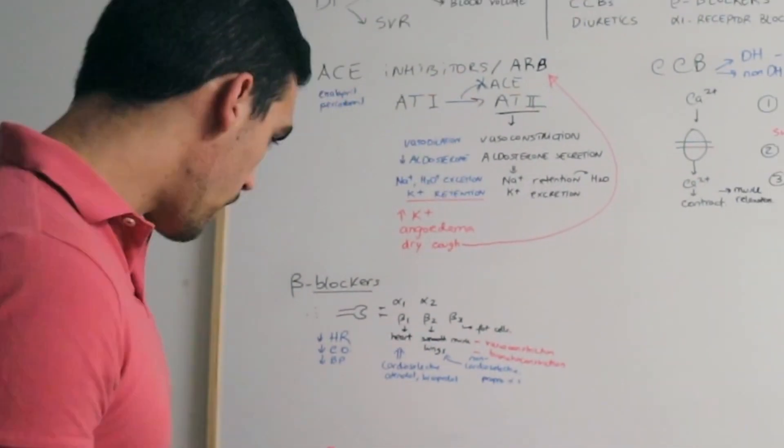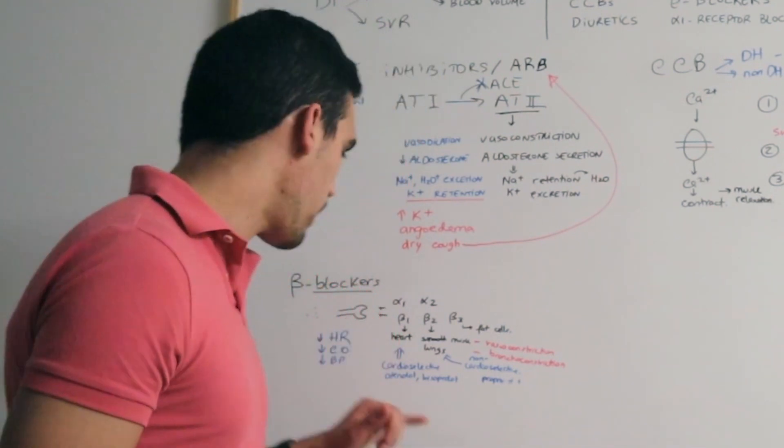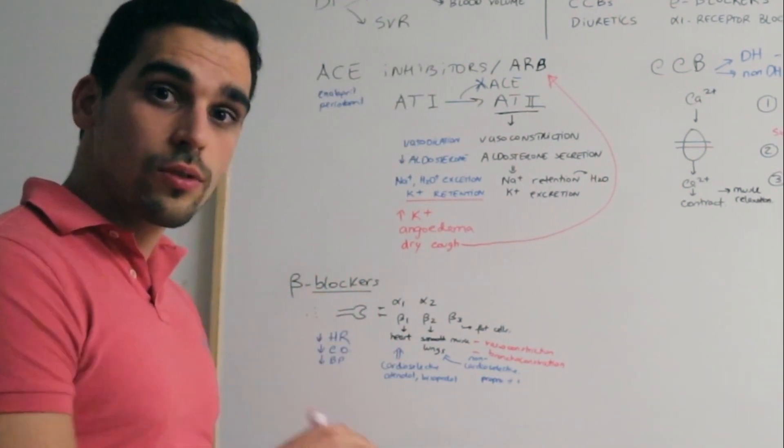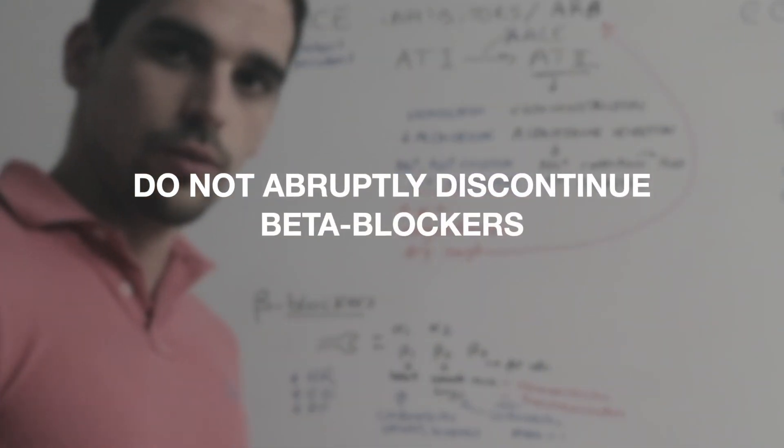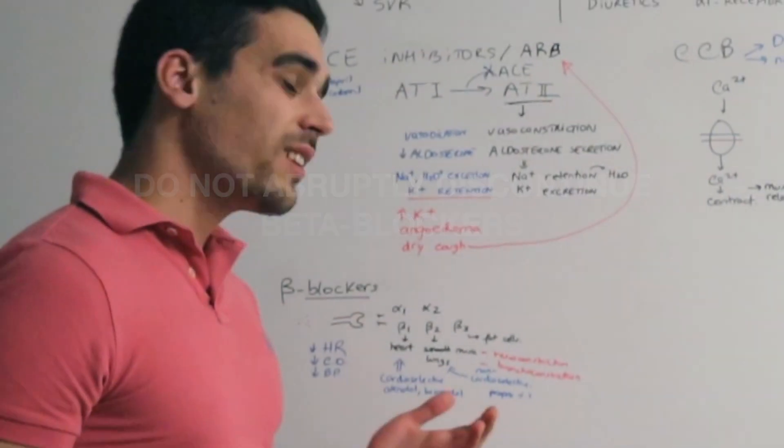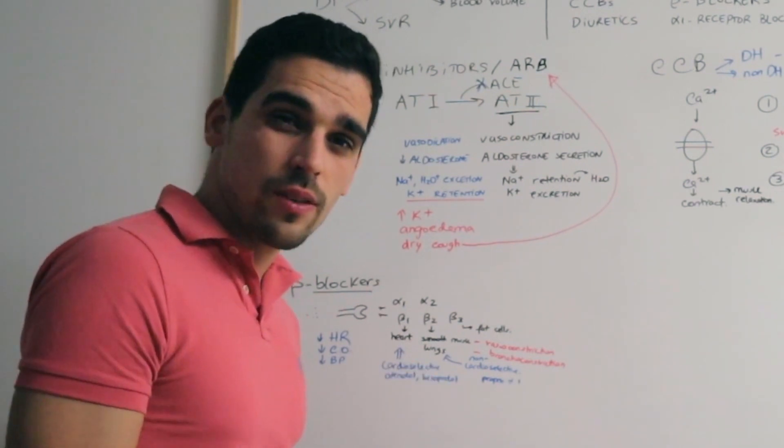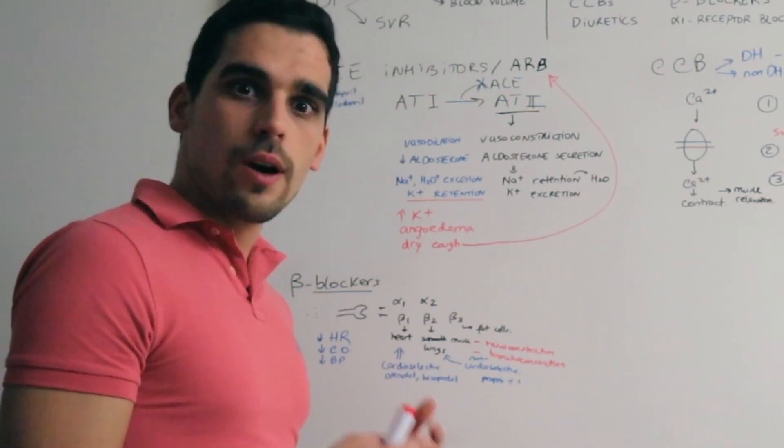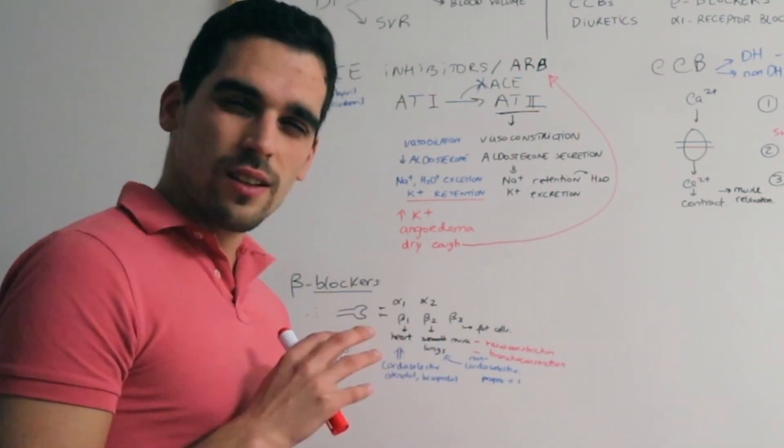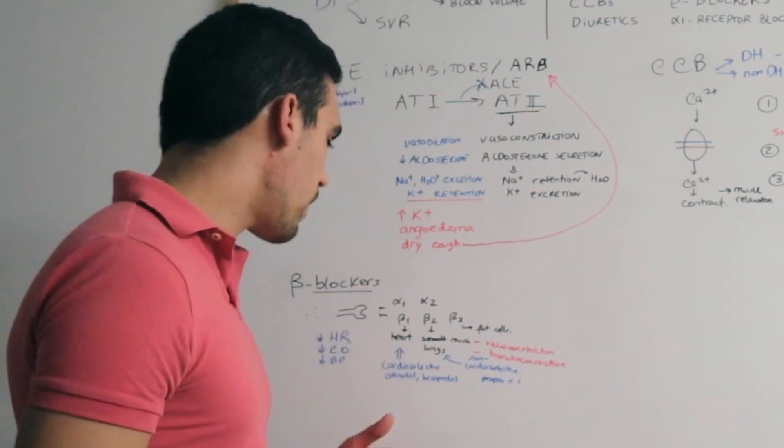The last thing to bear in mind about beta blockers is that they should not be abruptly discontinued, because if they are, then some cardiovascular symptoms may appear. People may even suffer from a heart attack or develop unstable angina.